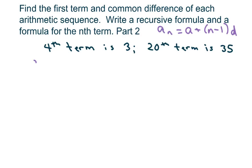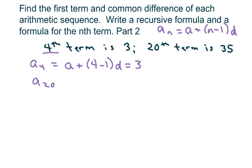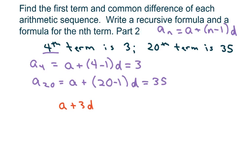So our fourth term is a plus n, our n is 4 — that's the number of terms — so 4 minus 1 times d, which equals 3. And my 20th term is my first term plus 20 minus 1 times d, and that equals 35. So I'm going to write a system of linear equations: a plus 3d equals 3, and a plus 19d equals 35.